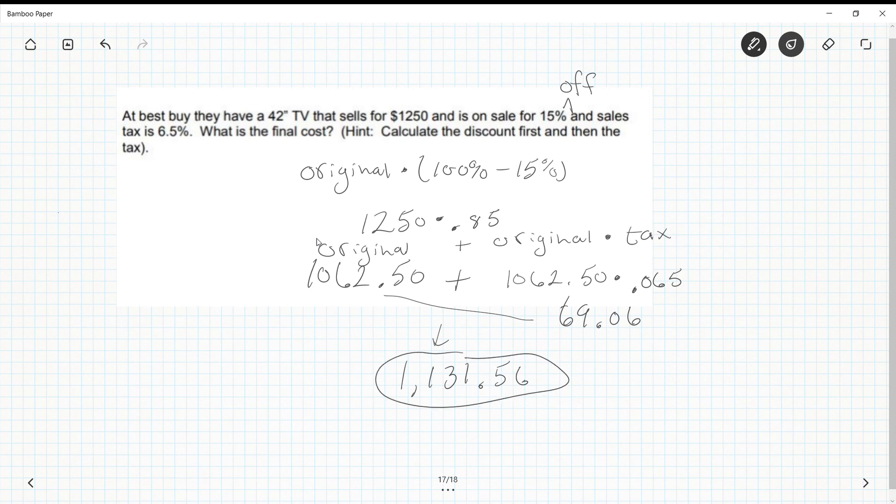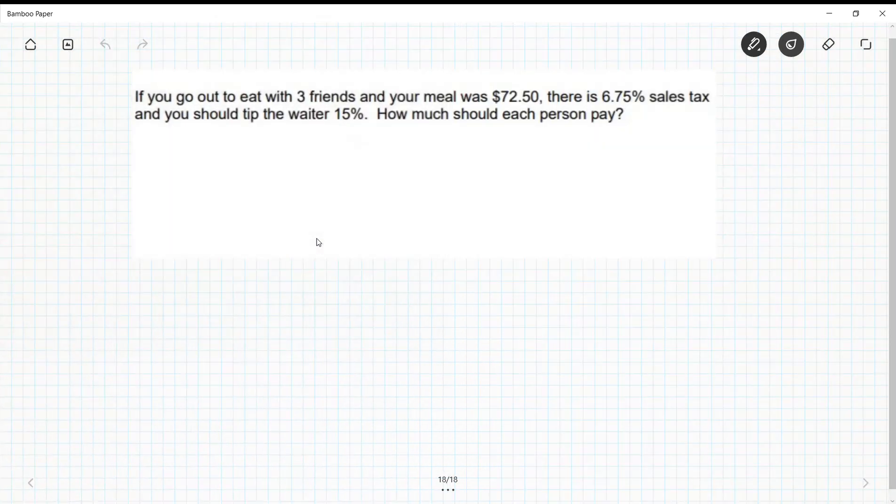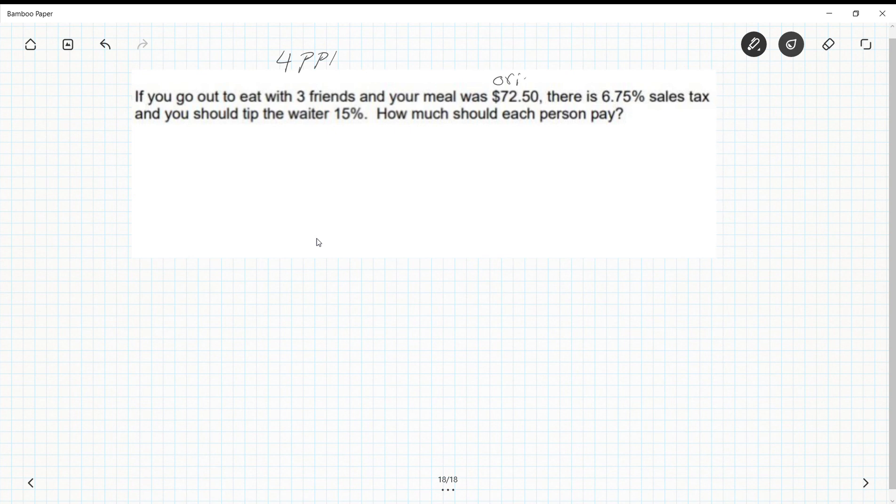All right, last piece, and this is one that will come up in life. If you go out to eat with three friends and your meal was $72.50, there was a 6.75% sales tax and you should tip the waiter 15%. So you go out with three friends, so total there are four people. The total meal was this, so we can think of this as original or food, and we have sales tax and tip. And it says what does each person pay, so this just adds one more step at the end.